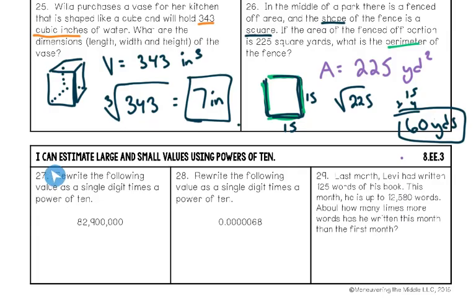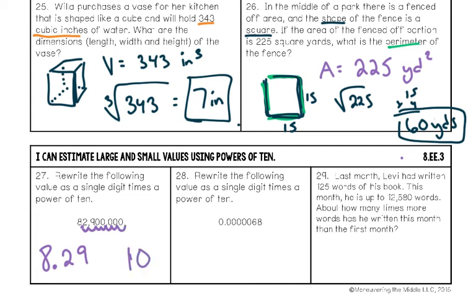The next section is about estimating large and small values using powers of ten — our scientific notation section. Number twenty-seven: rewrite the value in scientific notation. Place the decimal between the first two digits to make a number between one and ten: 8.29. Count how many times you move the decimal: seven times. Final answer: 8.29 times 10 to the seventh. Since it said estimate, 8 times 10 to the seventh is also acceptable.